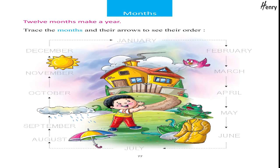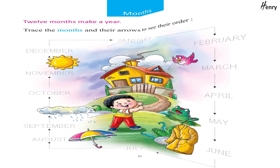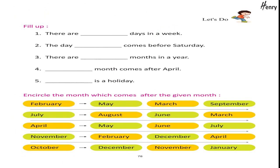Months: twelve months make a year. Trace the months and arrows to see their order: January, February, March, April, May, June, July, August, September, October, November, December. Let's do: fill up. Encircle the month which comes after the given month.